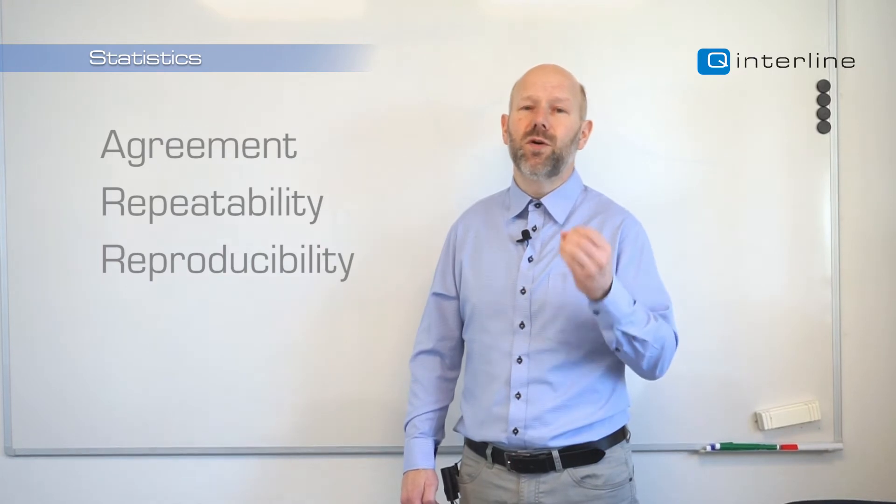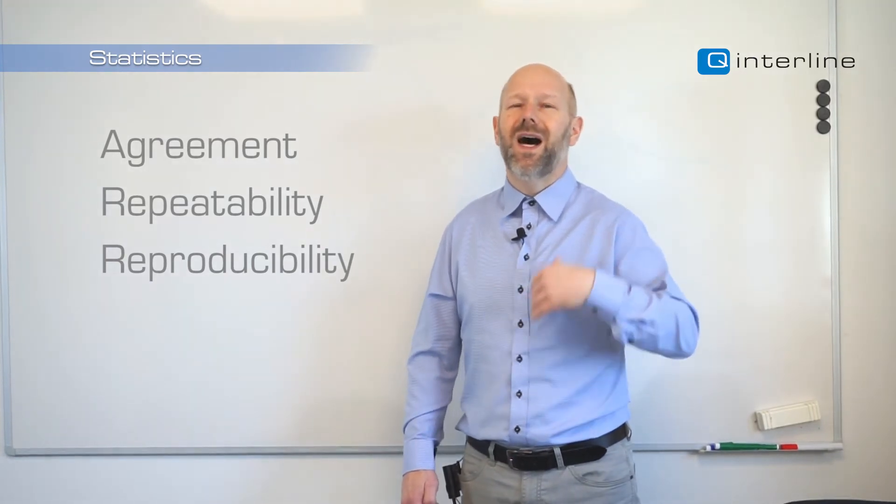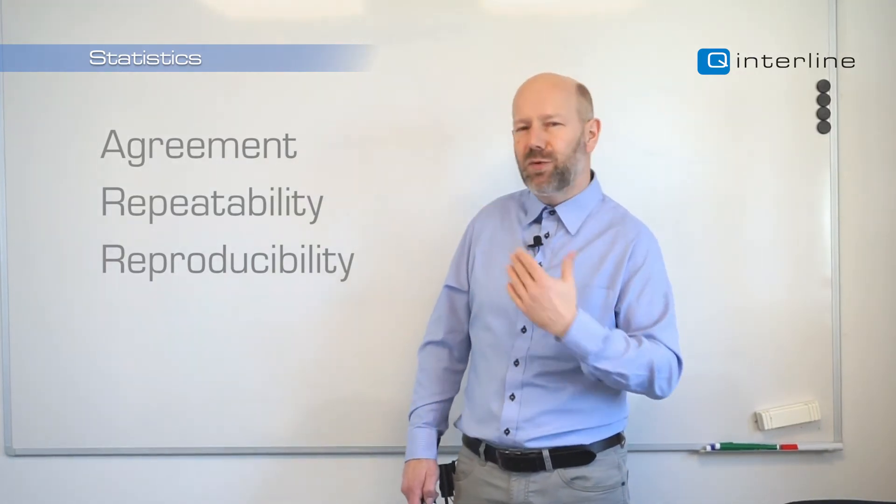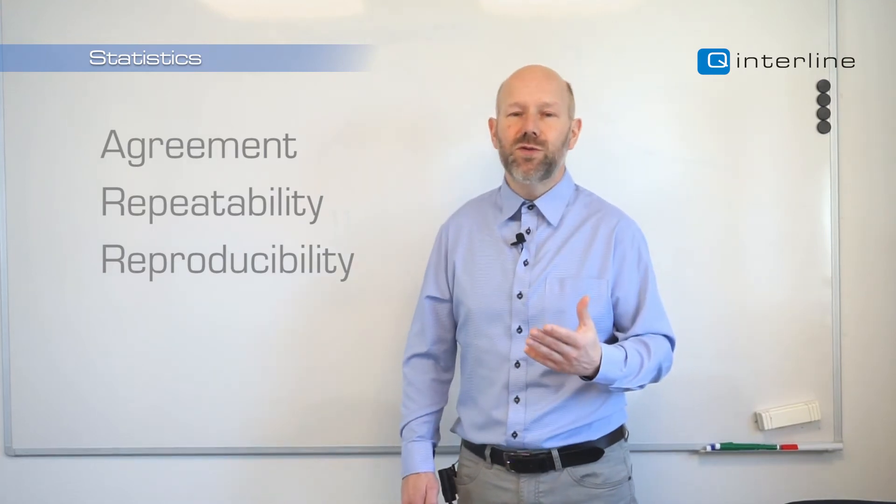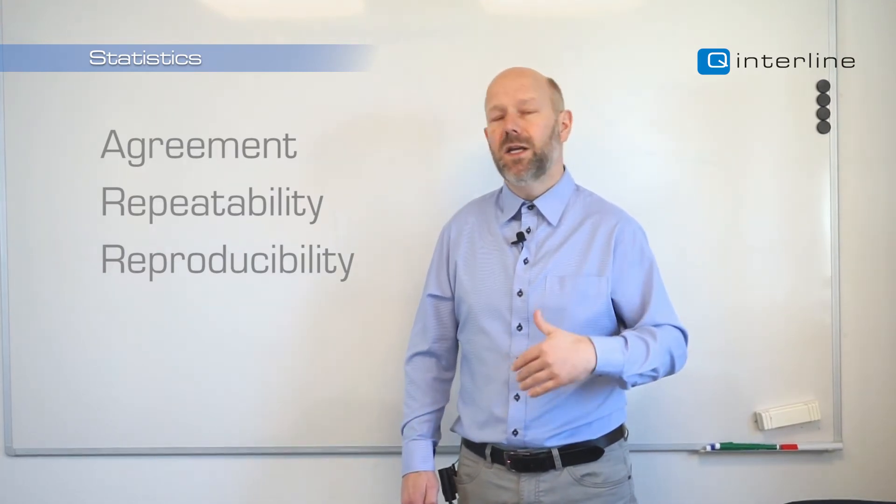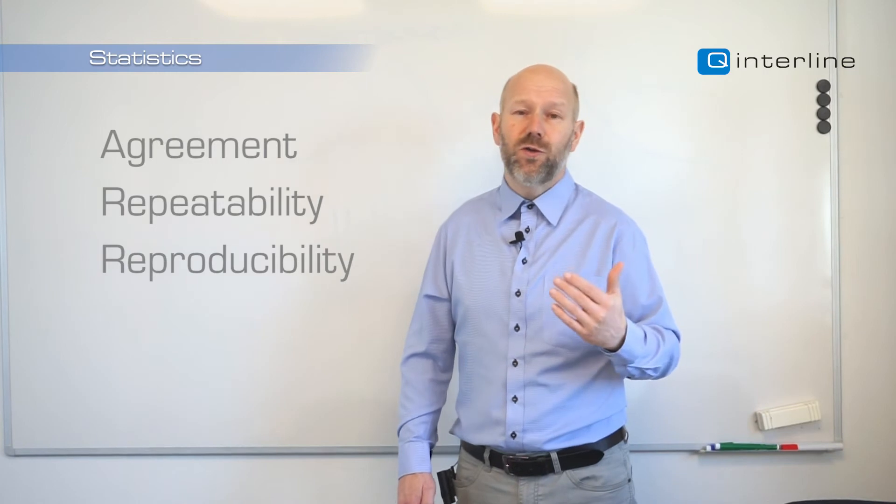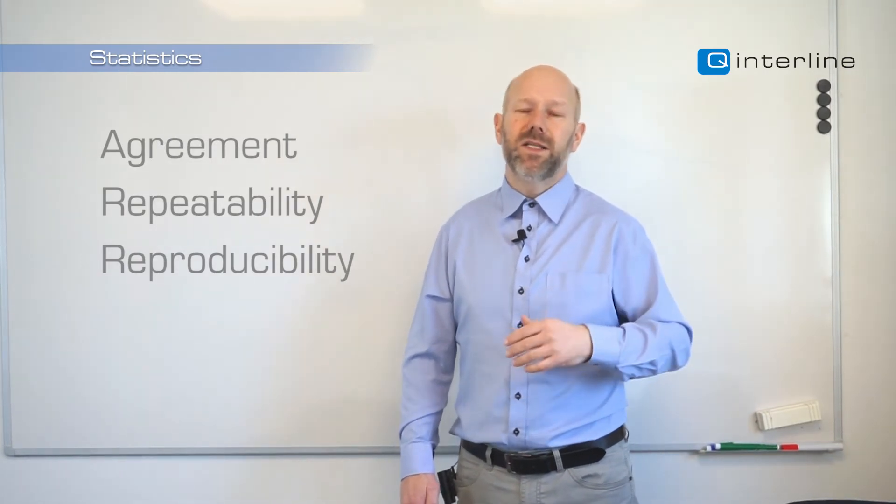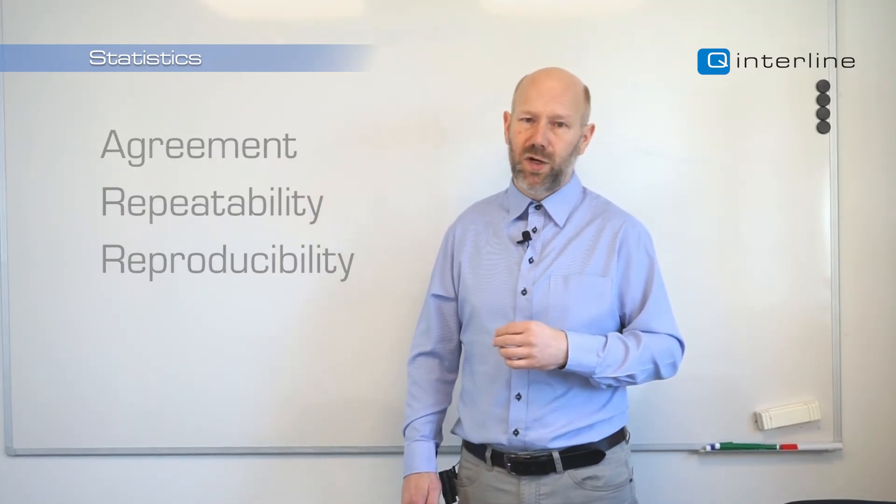How close can we run the process to a certain target? How certain are we, back to probability, that what we produced is really on target and very close to an interesting limit where we optimize yield and outcome of the production.